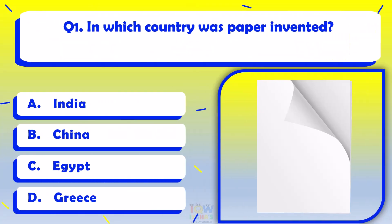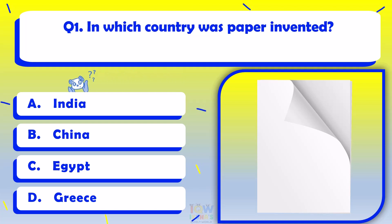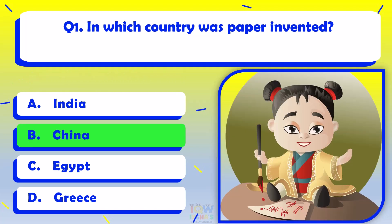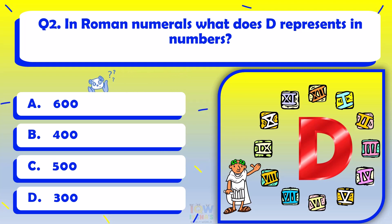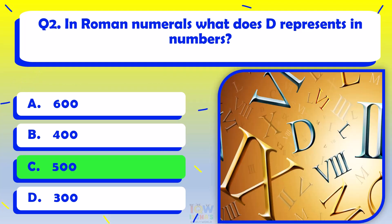In which country was paper invented? China. In Roman numerals, what does D represent in numbers? 500.